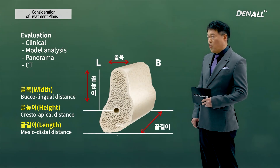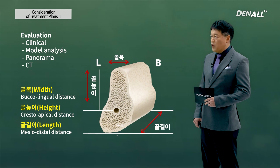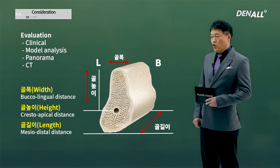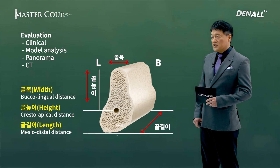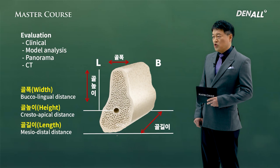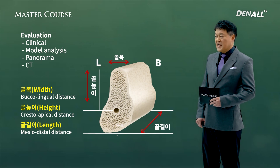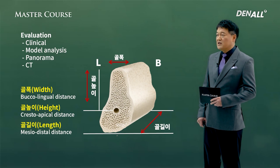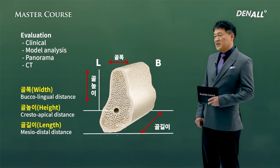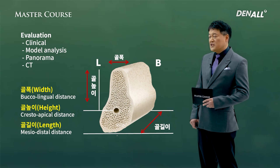Assessing bone quantity, we need to check bone width (buccolingual distance), bone height (crestal-apical distance), and bone length (mesiodistal distance). These three factors need to be assessed.